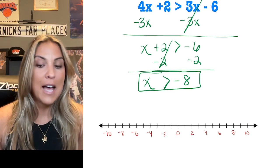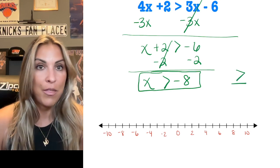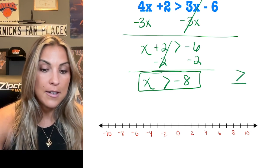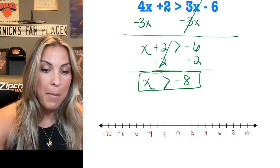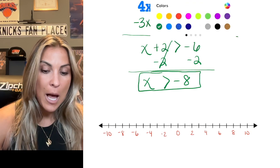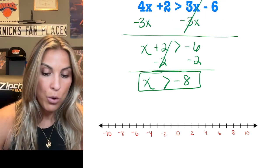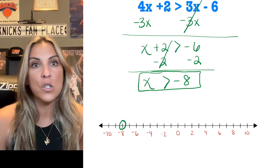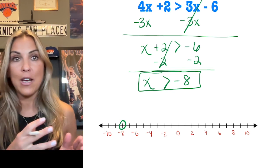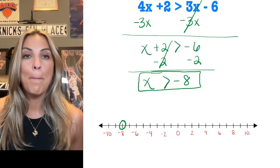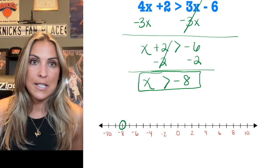My inequality symbol does not have the or equal to, it's not that symbol. So because it doesn't have the or equal to, that means that negative 8 is not part of the solution. And I'm going to show that by putting an open circle on negative 8. That shows me that negative 8 is where my solution begins, but it's not part of that solution set.